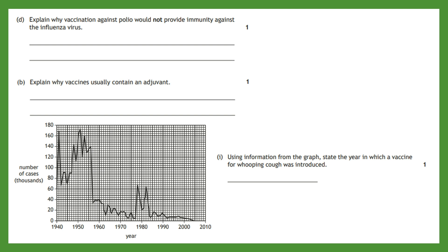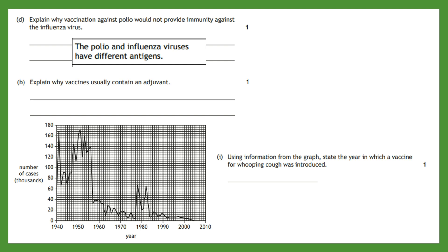The first question asks: explain why vaccination against polio would not provide immunity against the influenza virus. This is because antigens are unique to each pathogen. Therefore, memory cells would only be effective against one specific type of antigen. The polio and influenza viruses have different antigens, so we would need separate vaccinations for each.